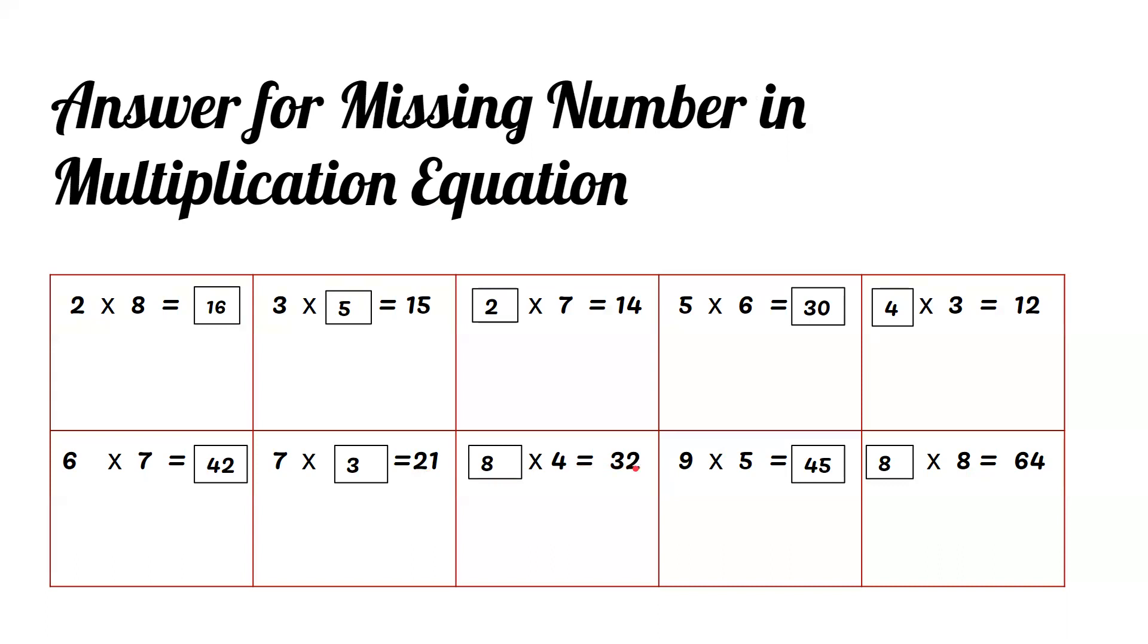8 times 4 equals 32, 9 times 5 equals 45, 8 times 8 equals 64.